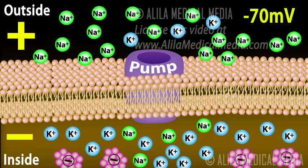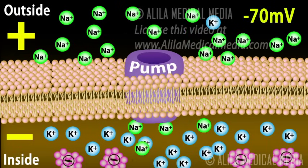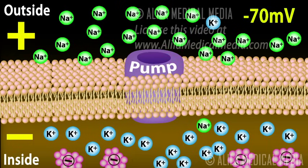At this resting state, there are concentration gradients of sodium and potassium across the cell membrane — more sodium outside the cell, and more potassium inside the cell. These gradients are maintained by the sodium-potassium pump, which constantly brings potassium in and pumps sodium out of the cell.